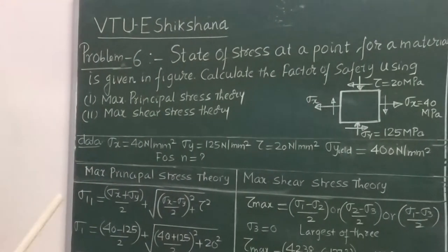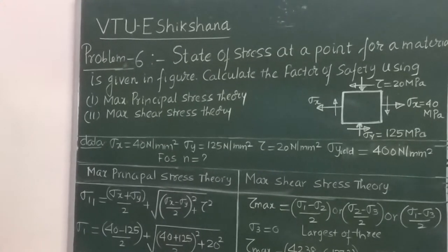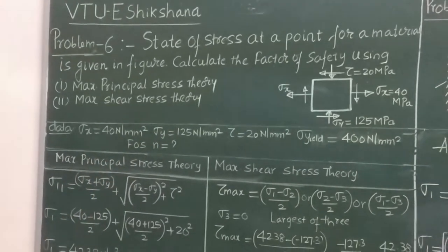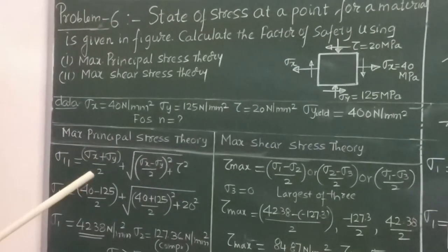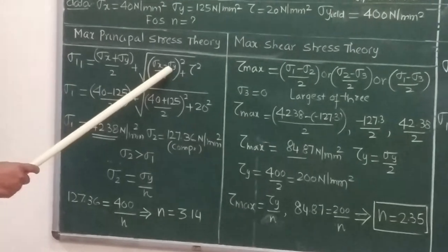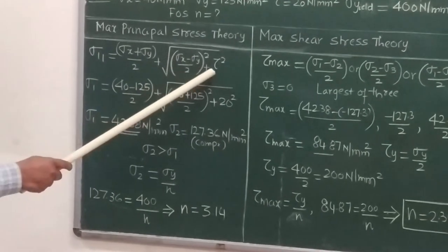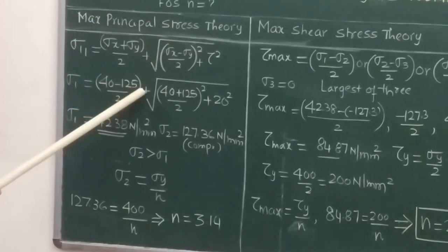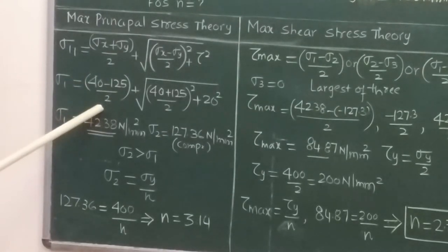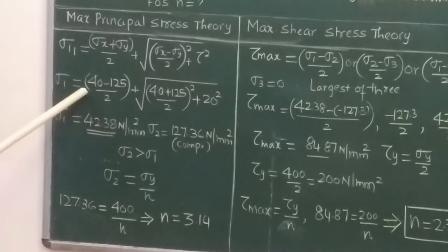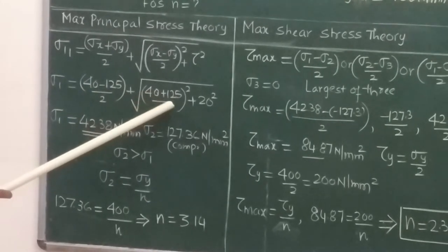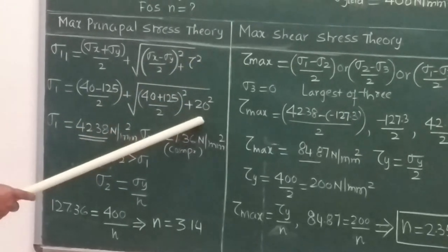To find the factor of safety we need to first find the principal stresses. Principal stresses can be found by using the values of direct stresses and shear stresses. The maximum principal stress is given by: σ₁ = (σx + σy)/2 ± √[((σx - σy)/2)² + τ²]. Substituting the values: (40 - 125)/2 ± √[((40 + 125)/2)² + 20²].